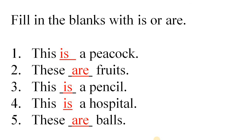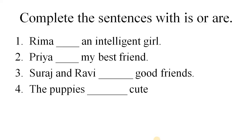Now it's practice time. Complete the sentence with 'is' or 'are'. Question one: Reema dash an intelligent girl. Number two: Priya dash my best friend. Number three: Suraj and Ravi dash good friends. Number four: The puppies dash cute. That's it for today. Have fun. Take care. Bye-bye. Thank you.